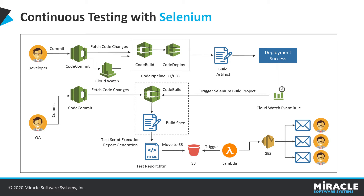Once the test report HTML file is generated using the commands in the build specification document, it is automatically uploaded to an S3 bucket. A Lambda function is configured so that whenever a file is dropped into that S3 bucket, it picks up the file and, with the help of AWS SES — Simple Email Service — sends that file as an attachment in an email to the end users. This is how end users receive the test report and can see whether the build was successful or not.